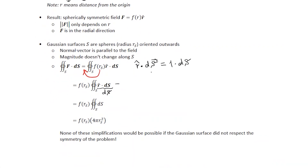R hat dotted with dS is equal to magnitude of R hat, which is 1, multiplied by magnitude of dS, which is just scalar dS, times the cosine of the angle between them. But if they are parallel, then the angle between them is 0, so this cosine is 1. So we just end up with dS. This integral is just the surface area of the sphere, which is equal to 4π R squared.